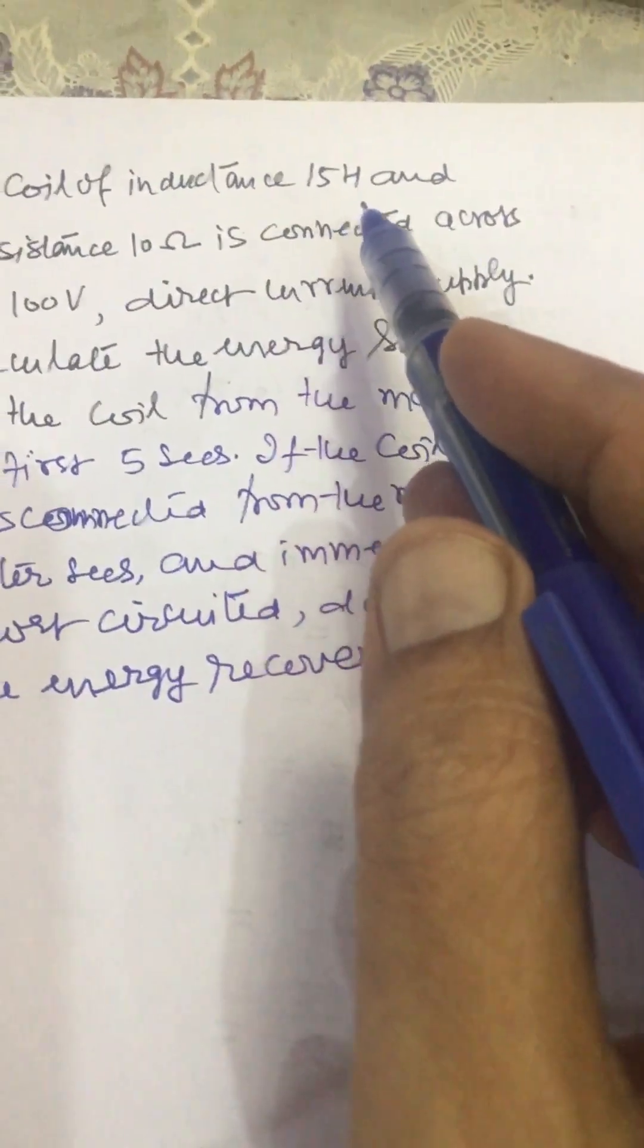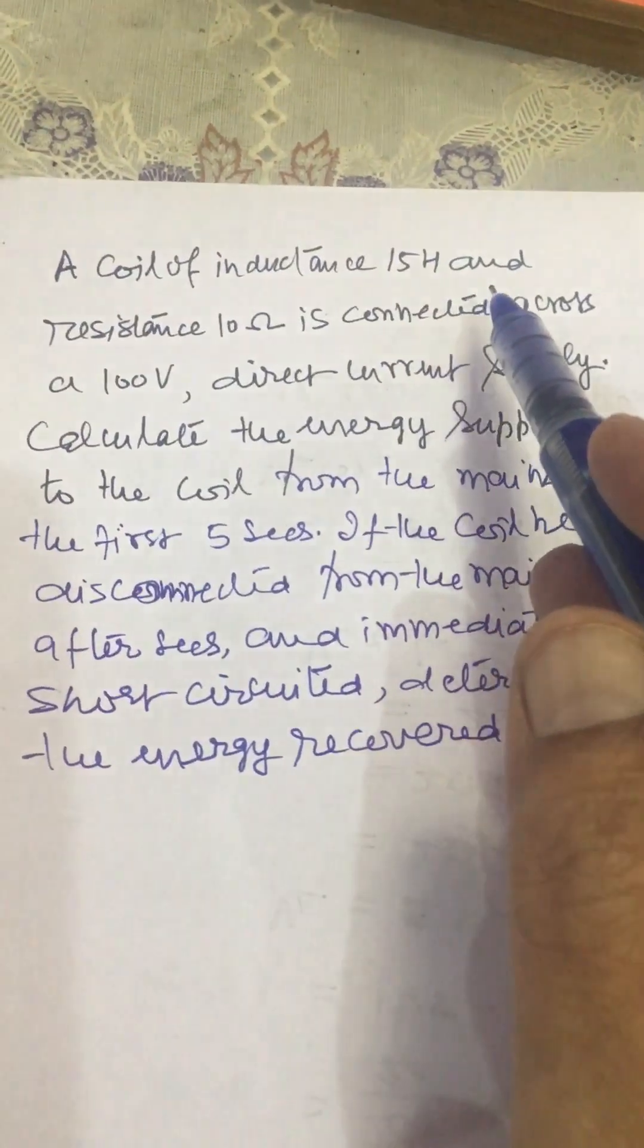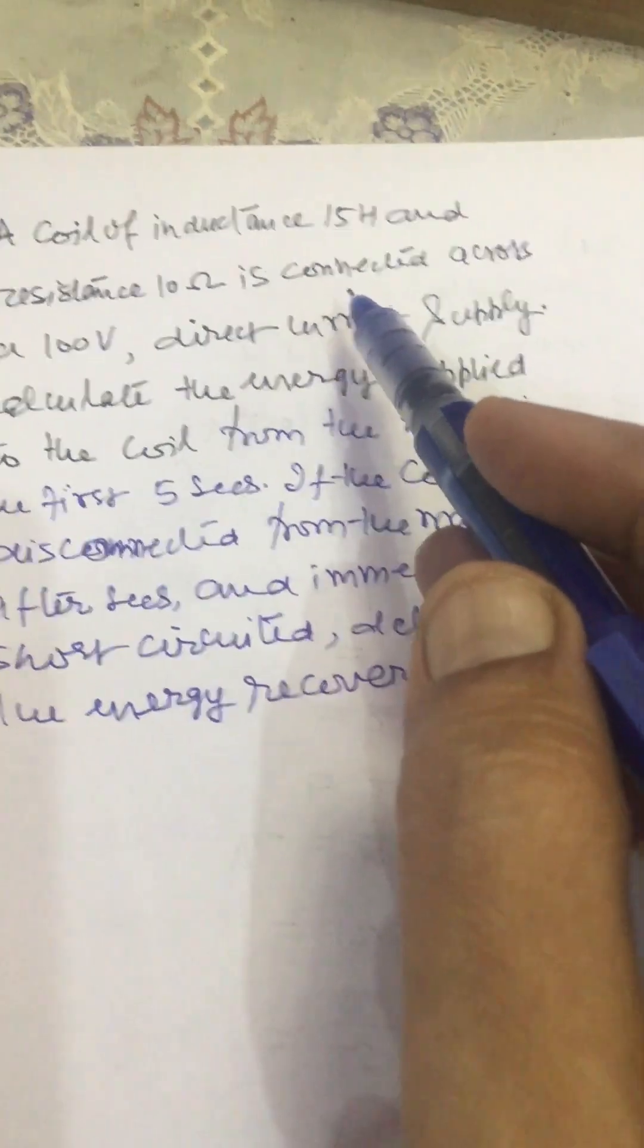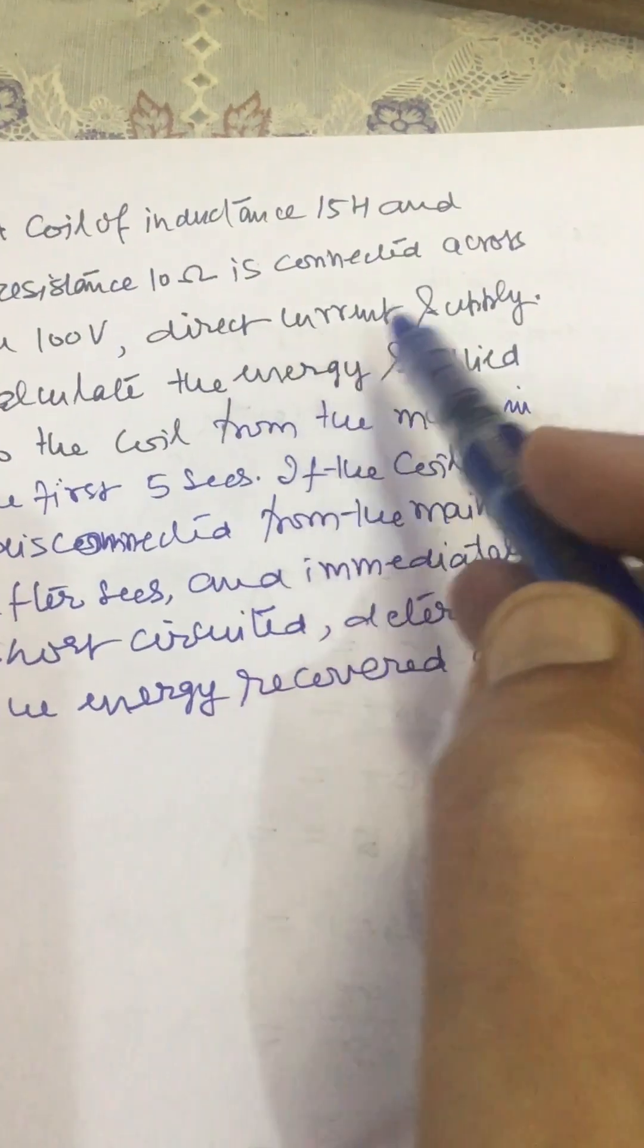The coil of inductance 15 Henry and resistance 10 ohm is connected across a 100 volt direct current supply.